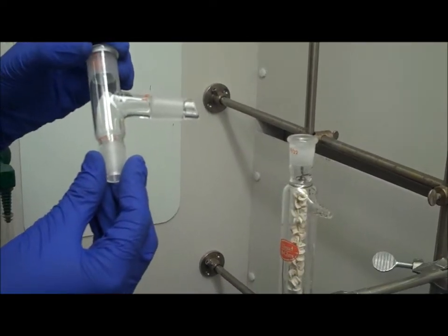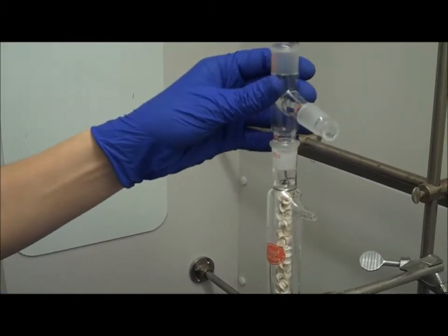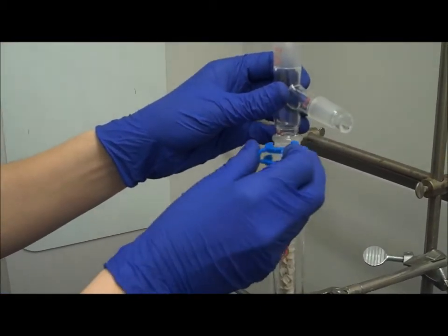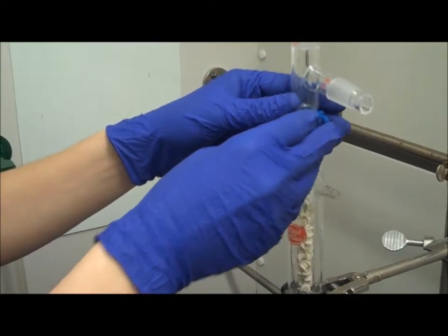This is the next piece of glasswork to be used in the fractional distillation apparatus. It attaches to the top of the fractional column. Always clamp down your glasswork to ensure you don't have glass breakage.